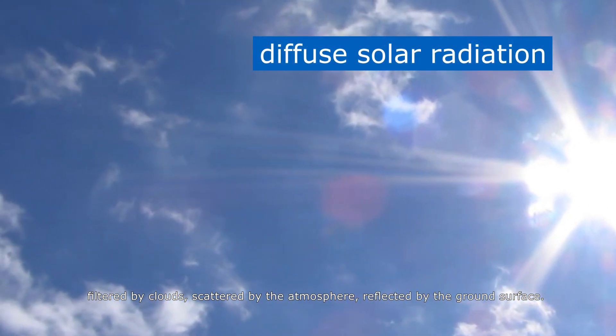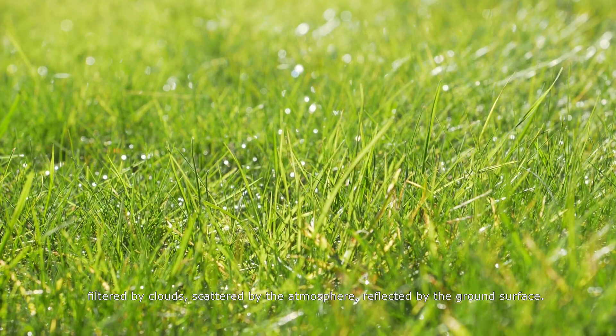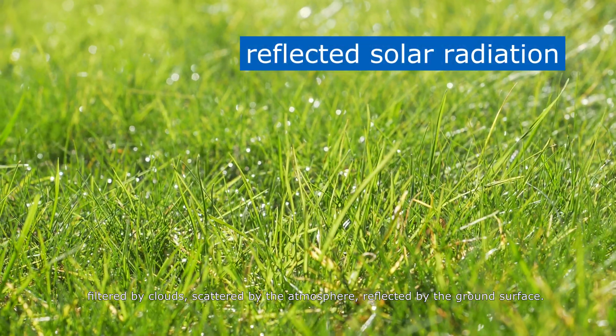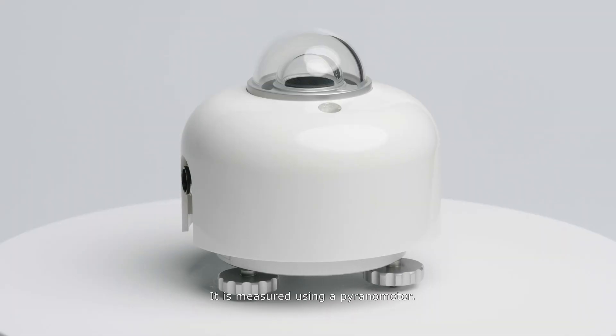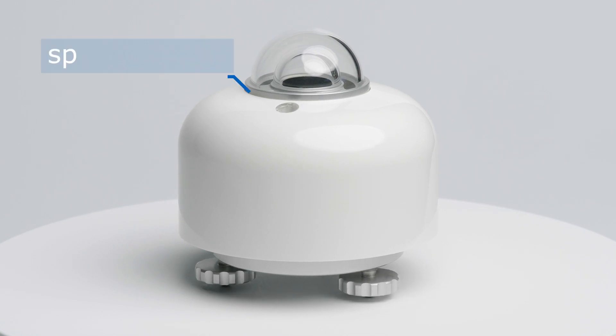Solar radiation can reach you filtered by clouds, scattered by the atmosphere, or reflected by the ground surface. It is measured using a pyranometer.